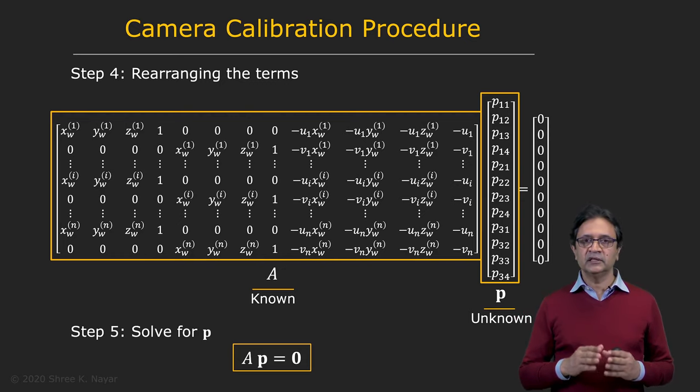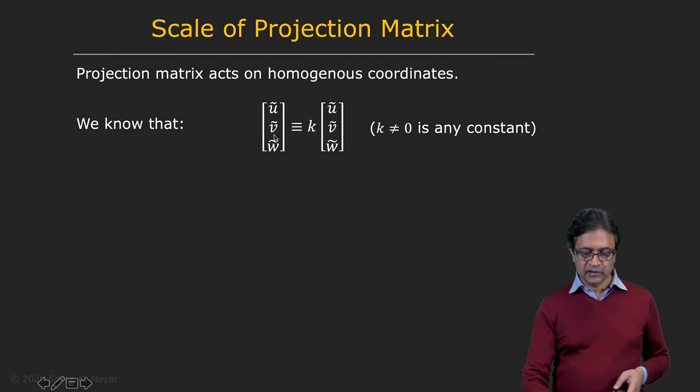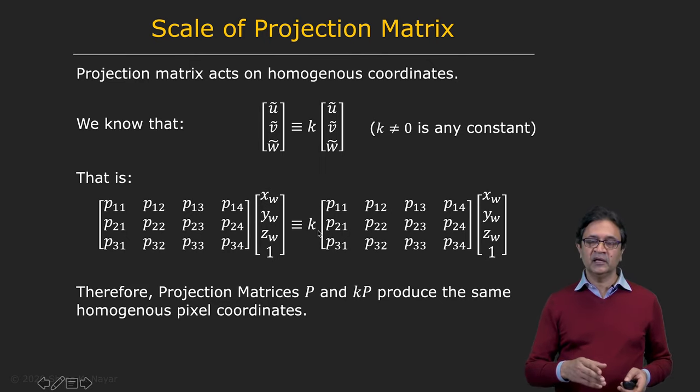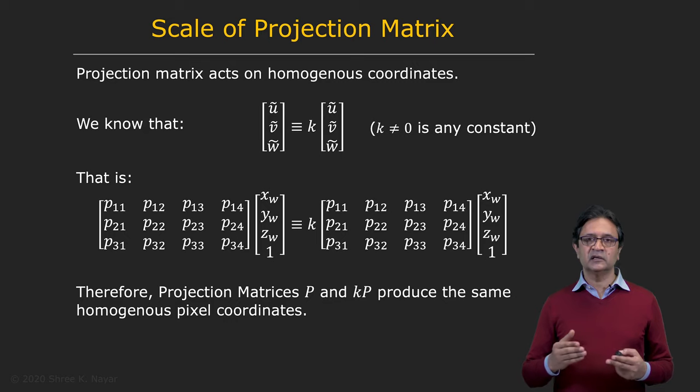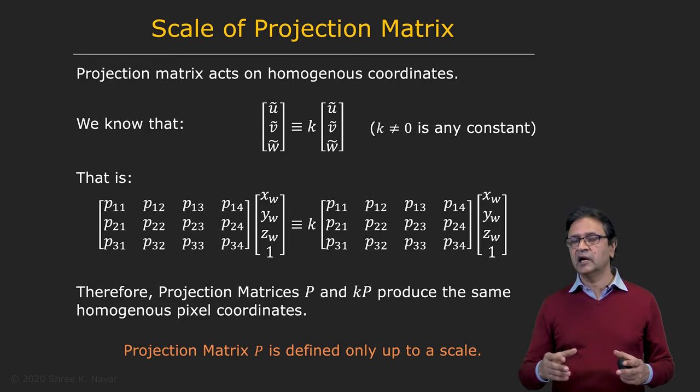Now, before we solve for P, let's take a look at an important property of P, which has to do with its scale. So we know that if you express an image point in homogeneous coordinates as such, and if you simply scale it with some factor K not equal to zero, these two are equivalent to each other, which means they end up giving you the same image coordinates UV. So that means that X_W times P, which is equal to this, is equivalent to X_W times P multiplied by some scale factor K. That means that the projection matrices P and K times P produce exactly the same homogeneous pixel coordinates. In other words, the projection matrix is only defined up to a scale factor.